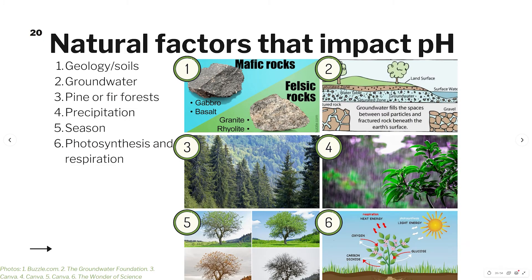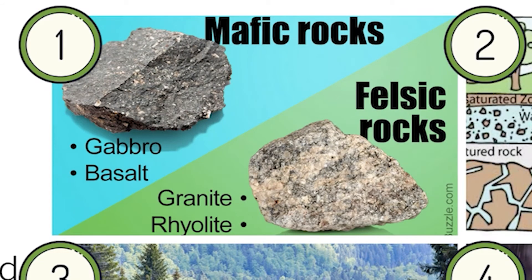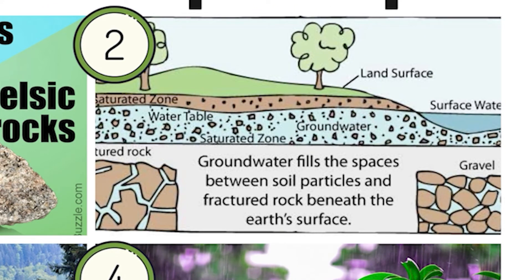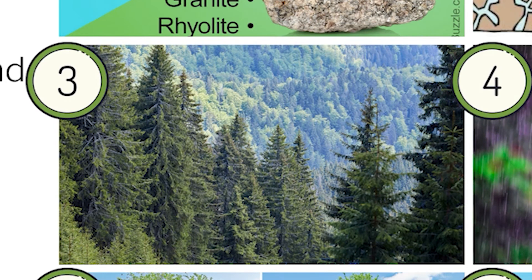Just like the other water quality parameters we have discussed, there are several natural and human-made factors that influence pH in our streams. First, geology and soils. Minerals released by the weathering of bedrock can affect water chemistry, including pH. In North Carolina, we have felsic rocks, which are more acidic, and mafic rocks, which are more basic. Groundwater associated with felsic rocks tends to have a pH less than 7, and mafic rocks tend to yield groundwater with a pH greater than 7. For pine and fir forests, decomposing needles of these trees add acidity to the soil and also influence the acidity of nearby streams.